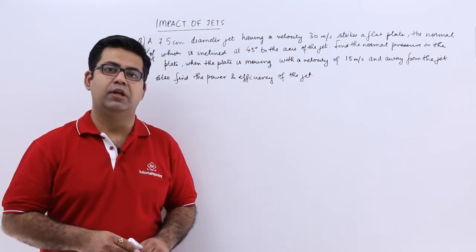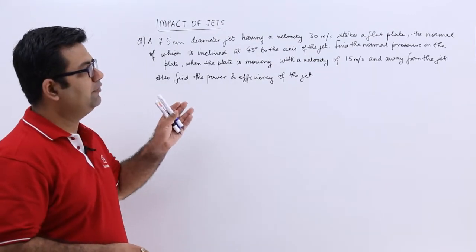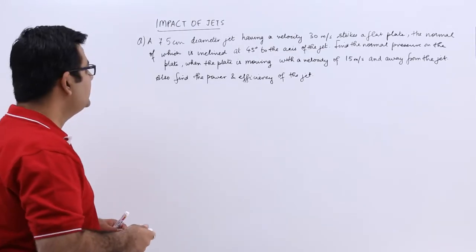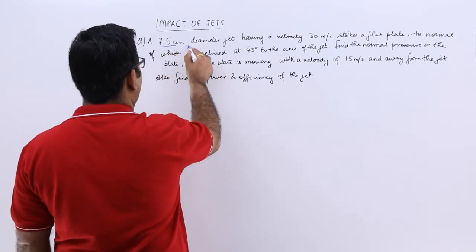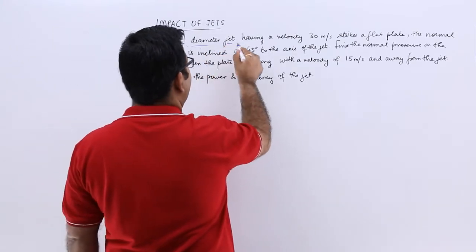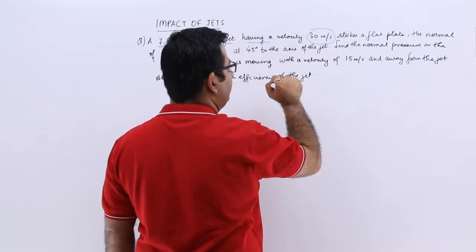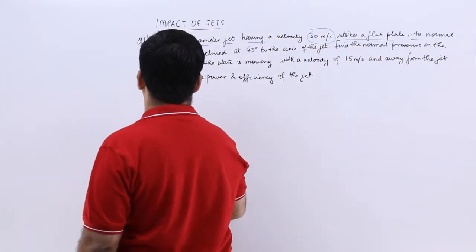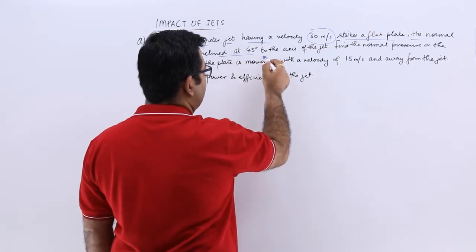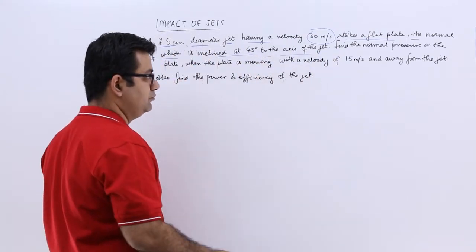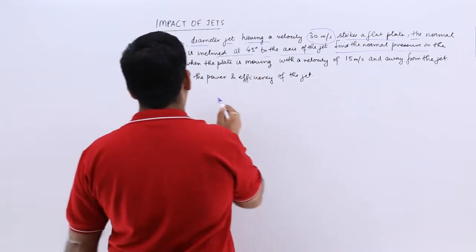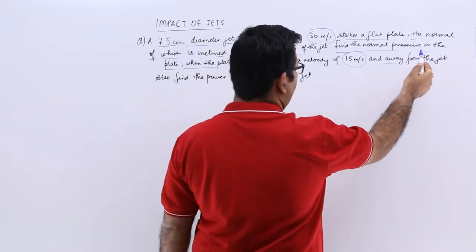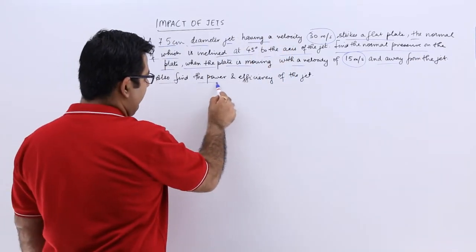Now let's look at a question on the case of a flat plate which is inclined to the axis of the jet and is moving away from the jet. We have a 7.5 centimeter diameter jet having a velocity of 30 meters per second. It is striking a flat plate whose normal is inclined at 45 degrees to the axis of the jet. Find the normal pressure on the plate when the plate is moving with a velocity of 15 meters per second away from the jet. Also find the power and the efficiency of the jet.